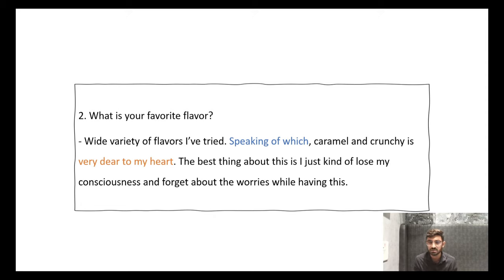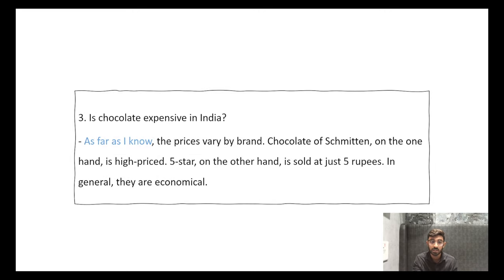Speaking of which - this phrase is what native speakers use most. This phrase means that you are taking reference from the next sentence. Like you have used many flavors, among them these two things, caramel and crunchy, are very dear to my heart. Very dear to my heart is again an idiom showing these two flavors are very close to your heart. And the second thing I have done here is instead of giving reasons, I have shown its good quality: The best thing about this is I just kind of lose my consciousness and forget about the worries while having this. Or the good thing about this is, it is kind of an advantage. You can use these.